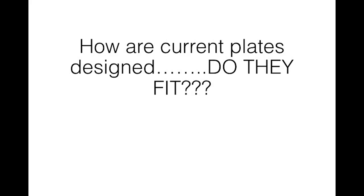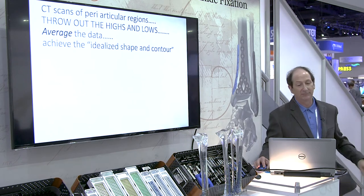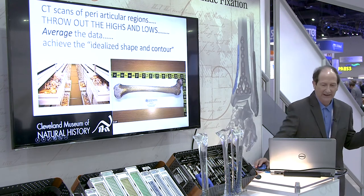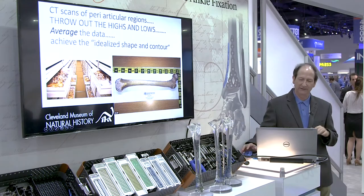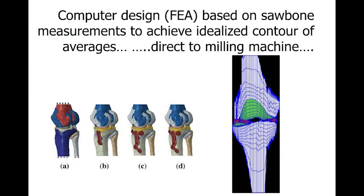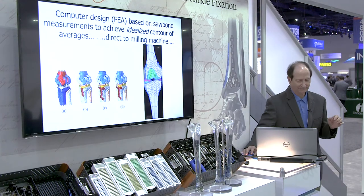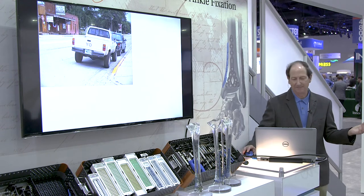How are plates normally designed? What they do is go to sawbones, or in this case the Cleveland Museum of Natural History, take a hundred distal tibias, do a CAT scan, throw out the highs and lows, average the data, and that gives you an idealized shape and contour. Or you do a finite element analysis based on sawbone measurements. But there's really not a lot of science there — no good reason why we do that other than that's what's always been done.